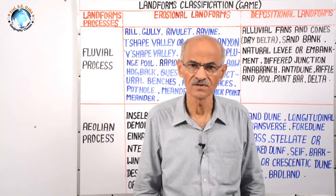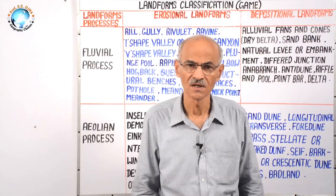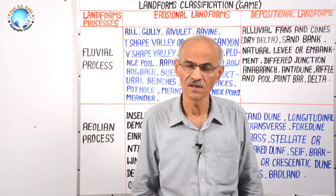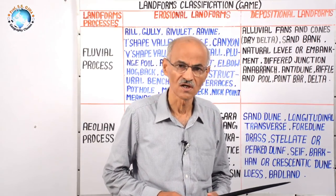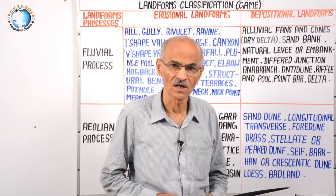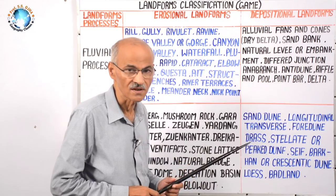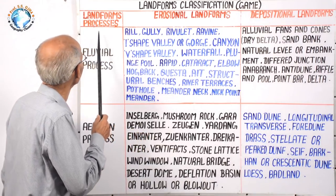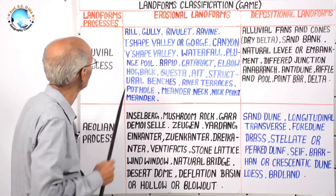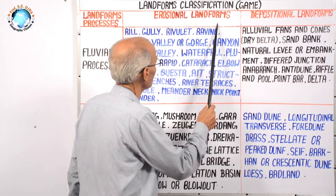In geomorphology we study different processes that sculpture landforms, like endogenic and exogenic, and simultaneously we study erosional and depositional landforms developed by those processes. All the erosional and depositional landforms need to be classified, and here they have been classified. On this board, processes are given in a vertical column and in a horizontal row, the landforms — erosional and depositional — have been written.